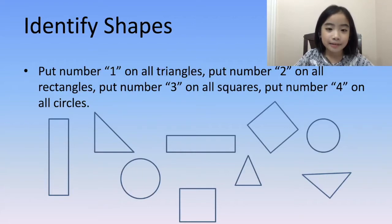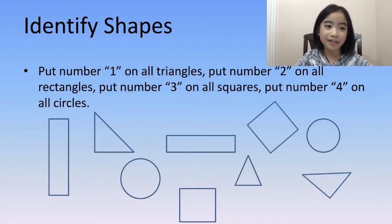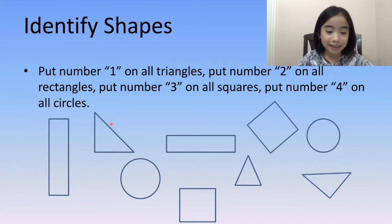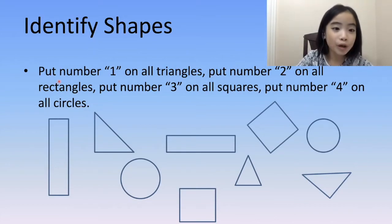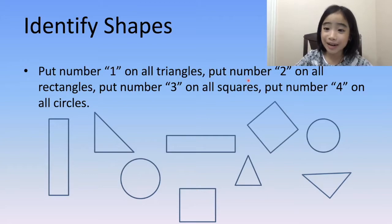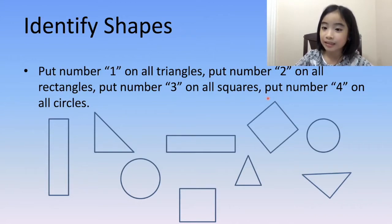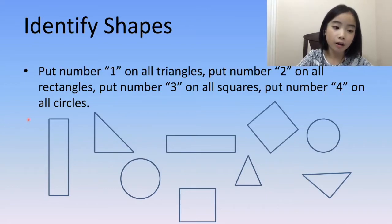Now, let's do a review. It's called Identify Shapes. Let's read the instructions: Put number one on all triangles. Put number two on all rectangles. Put number three on all squares. And lastly, put number four on all circles.